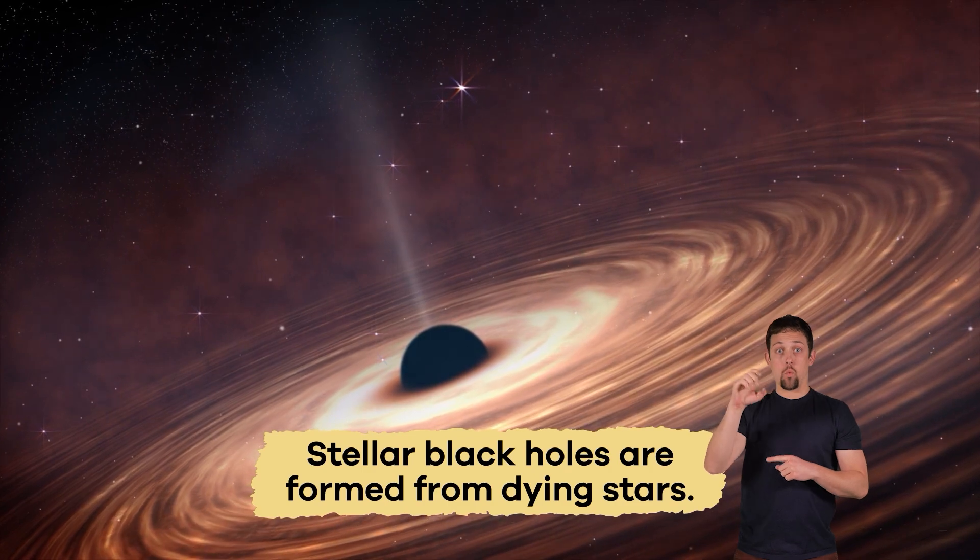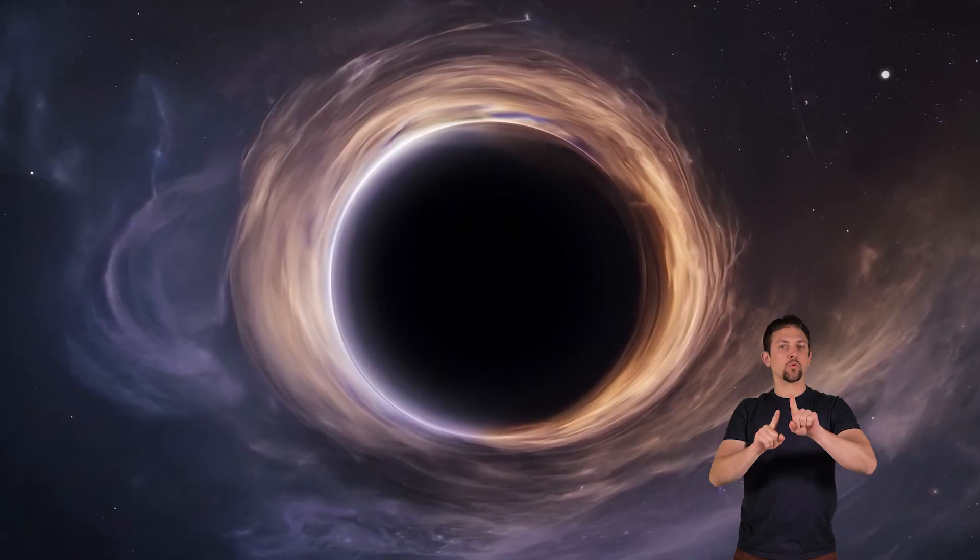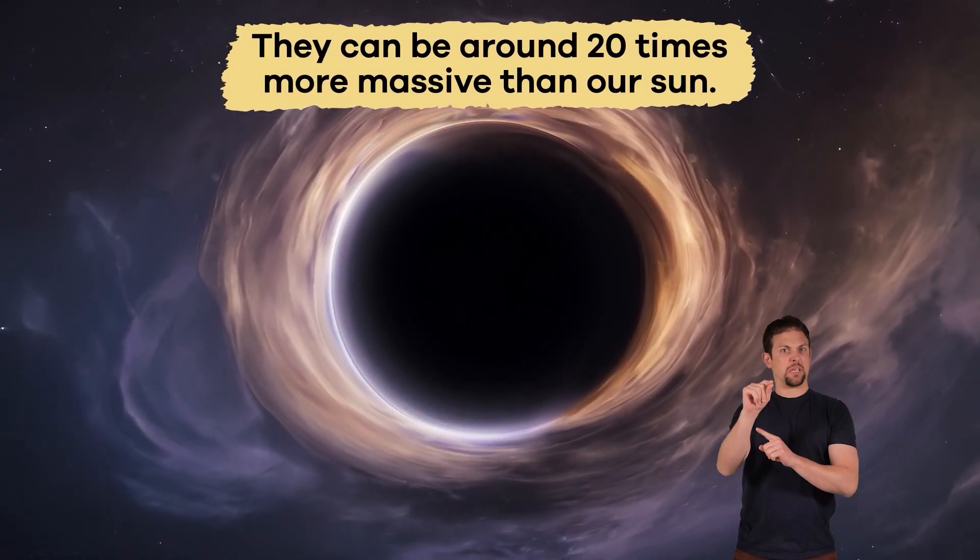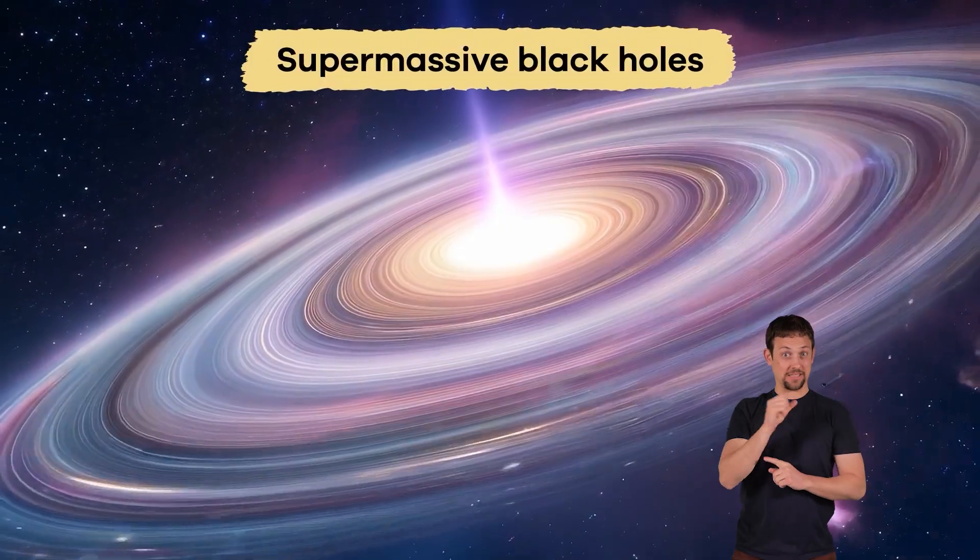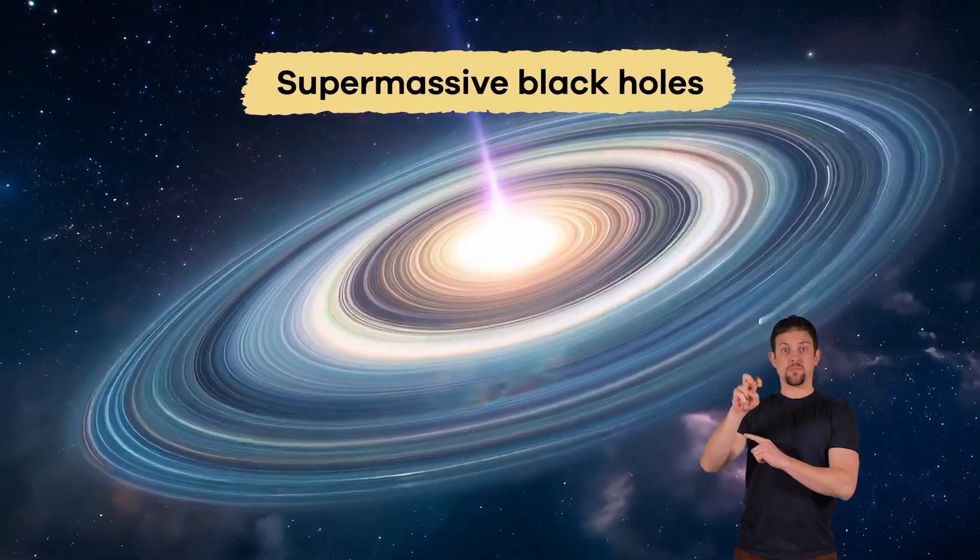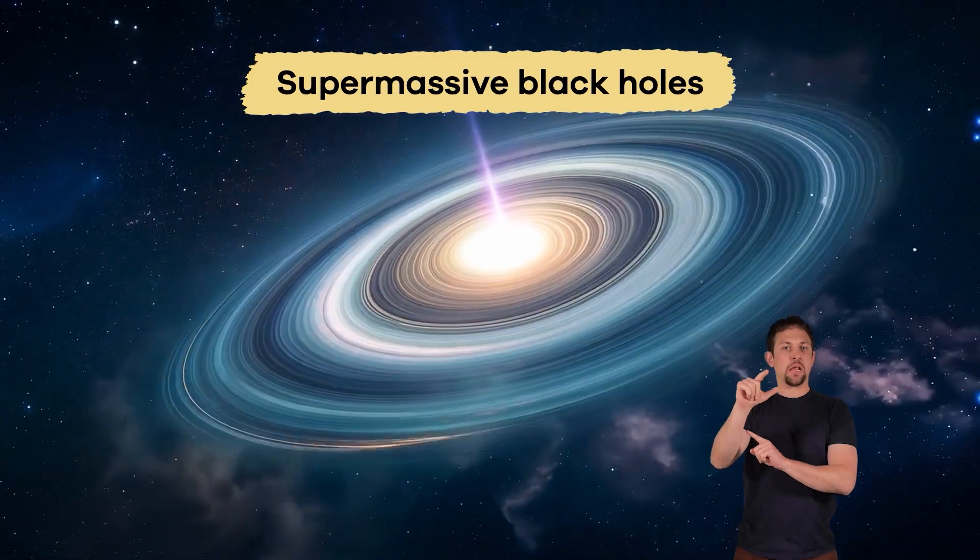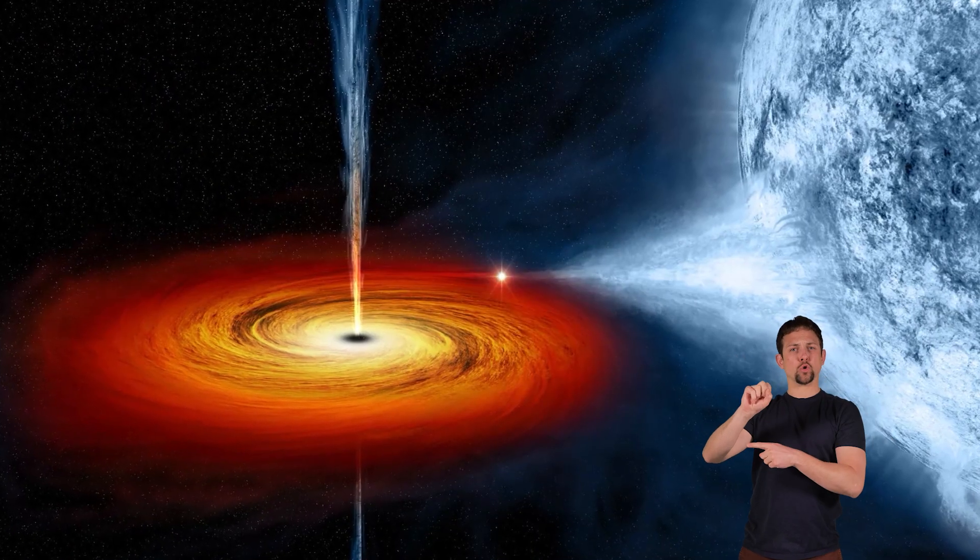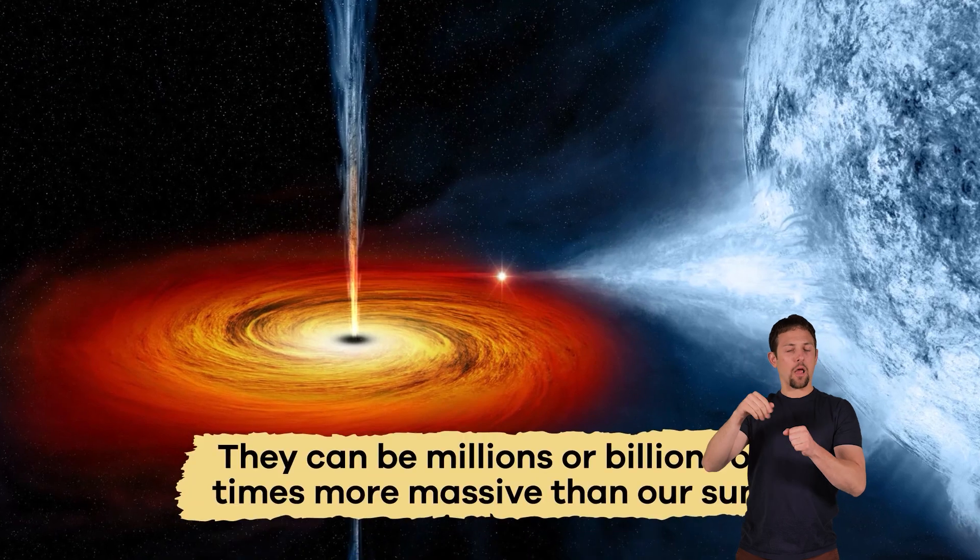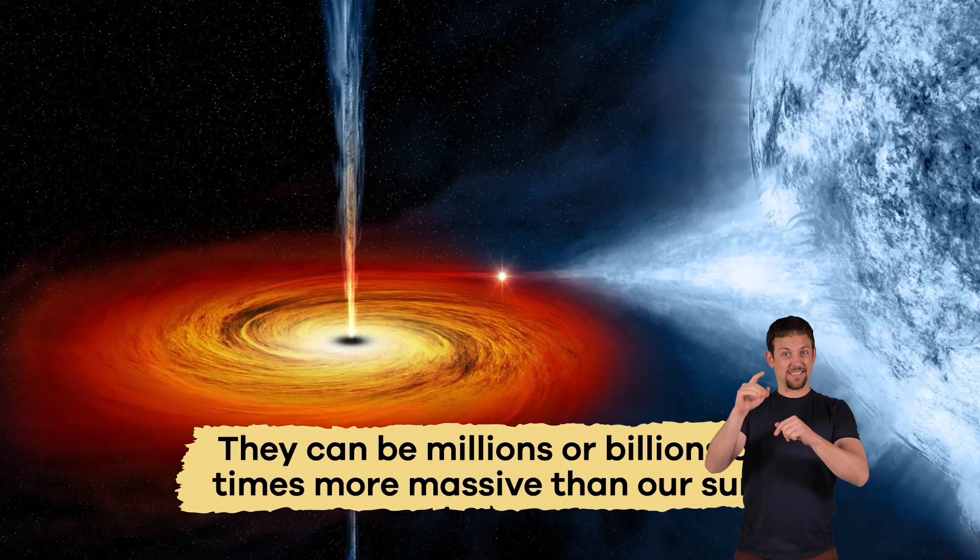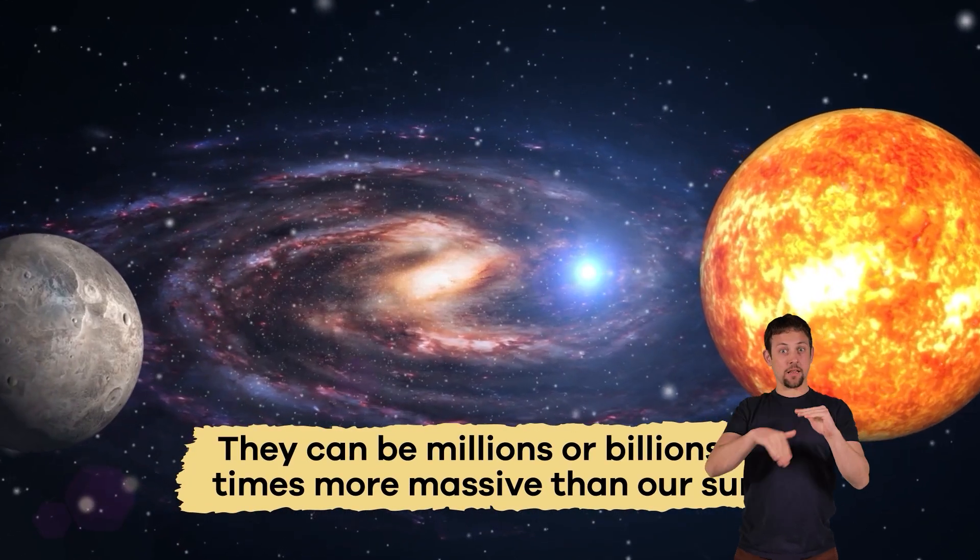Stellar black holes are formed from dying stars and can be around 20 times more massive than our sun. Supermassive black holes are found at the centers of galaxies. They are called supermassive because they can be millions or billions of times more massive than our sun.